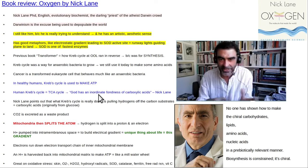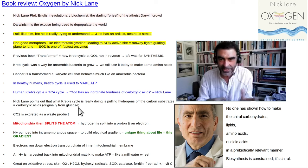He says, God has an inordinate fondness for carboxylic acids. If you look at the biochemistry of human metabolism from glycolysis through Krebs cycle, you're primarily working with carboxylic acids. Krebs cycle is really pulling hydrogens off of carbon substrates — the carboxylic acids, originally from glucose, though they can also be fed in from amino acids or from the breakdown of fats. CO2 is the excreted waste product.